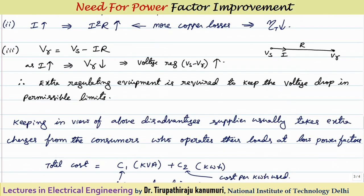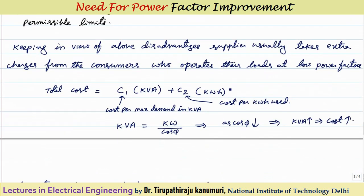The third disadvantage is voltage regulation. For a transmission line with resistance R, the receiving-end voltage equals sending-end voltage Vs minus I·R. As current increases, the receiving-end voltage decreases — voltage regulation worsens. We want the difference between no-load and full-load voltage to be minimized, but more current means more voltage drop. To compensate and maintain constant receiving-end voltage, extra regulating equipment is required, which also increases initial investment.